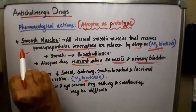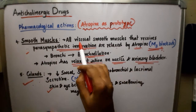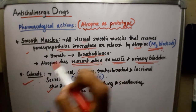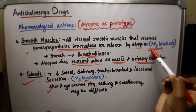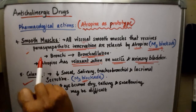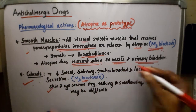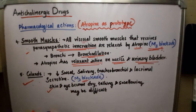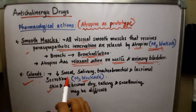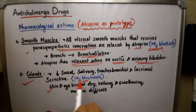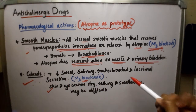Atropine relaxes all visceral smooth muscles that receive parasympathetic nerve supply through blockage of M3 receptors. It acts on smooth muscles of the bronchi causing bronchodilation, and has a relaxant action on the ureter and urinary bladder. On glands, anticholinergic drugs decrease sweat, salivary, tracheobronchial, and lacrimal secretion through blockage of M3 receptors.